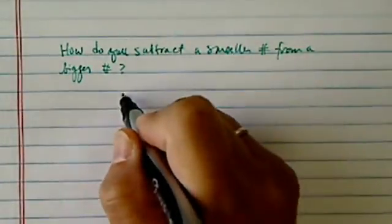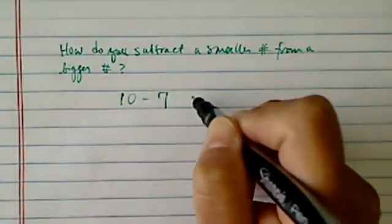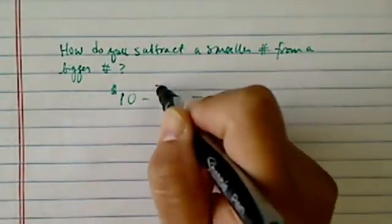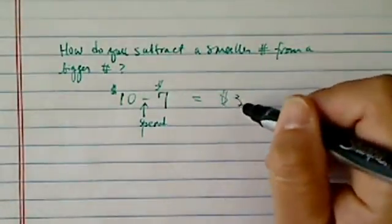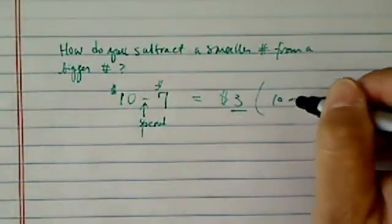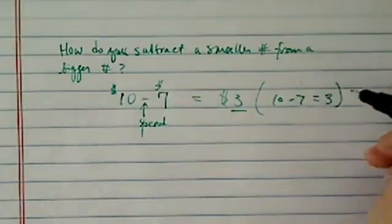Well, of course, when we started with math, we have 10 minus 7. So if you have $10, you spend $7, and you have literally $3 left. So 10 minus 7 equal to 3.